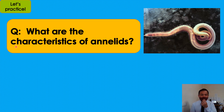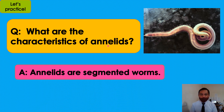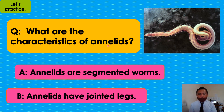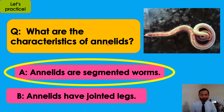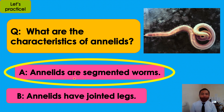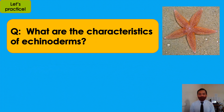What are the characteristics of annelids? Choose your answer: A or B. I will give you three counts: one, two, three. Very good! The answer is A — annelids are segmented worms.